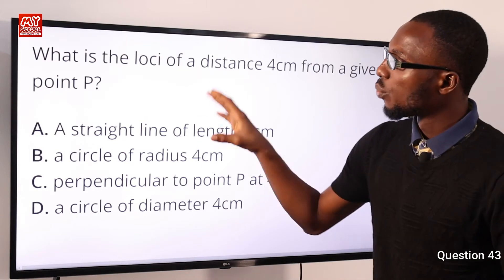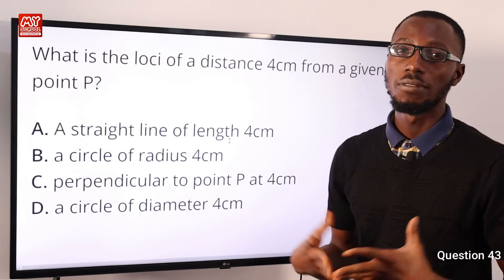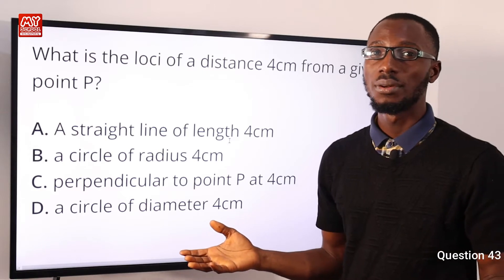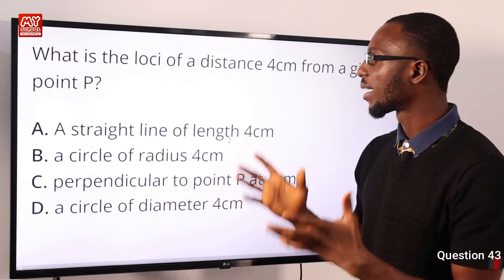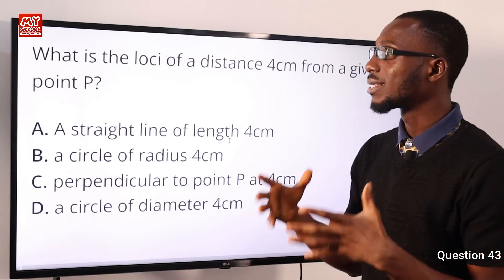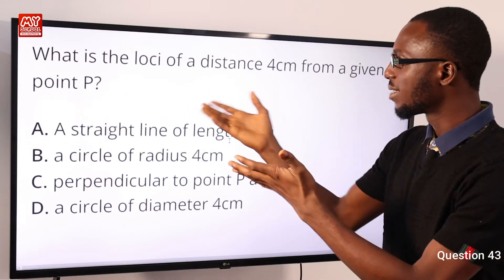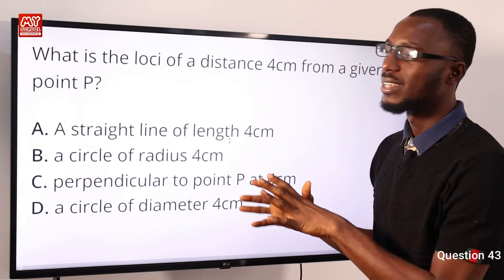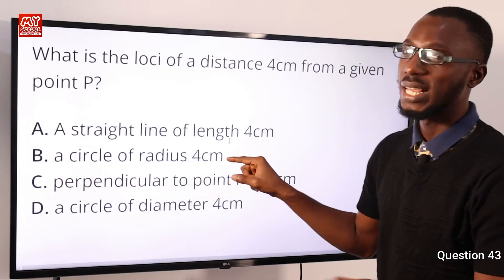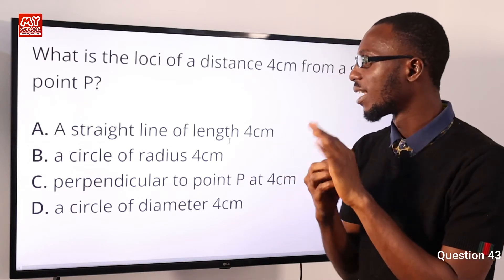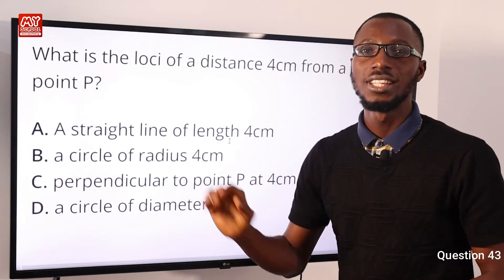Question 43: What is the locus of a point 4 cm from a given point P? Recall that locus describes the position of points obeying a certain condition. A circle is the locus of points equidistant from a fixed center point. So the answer is option B: a circle of radius 4 cm, where all points are equidistant from center P.